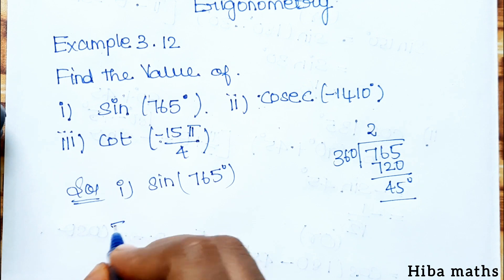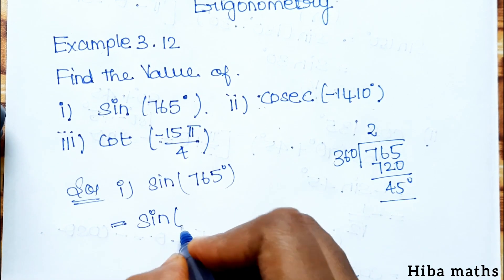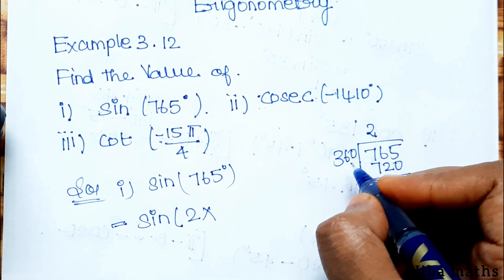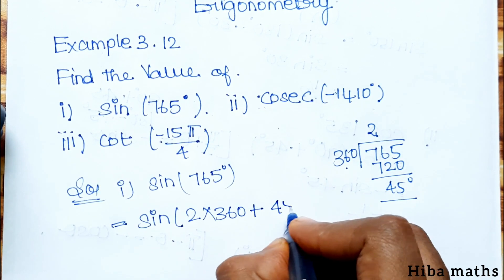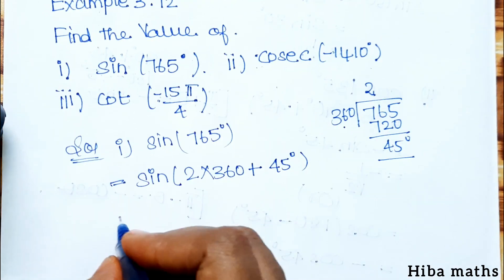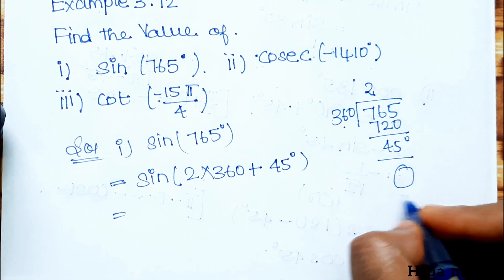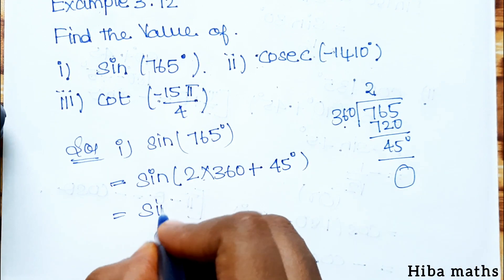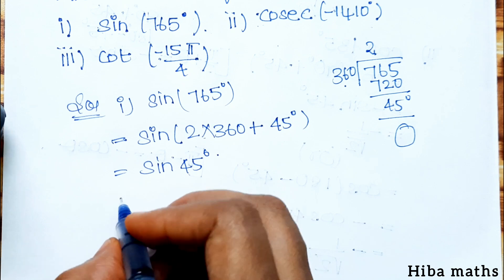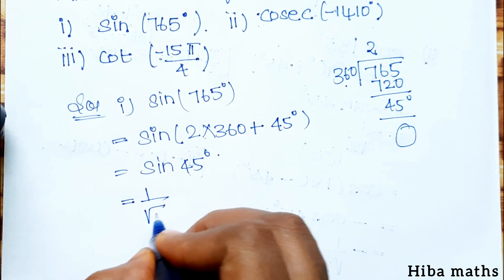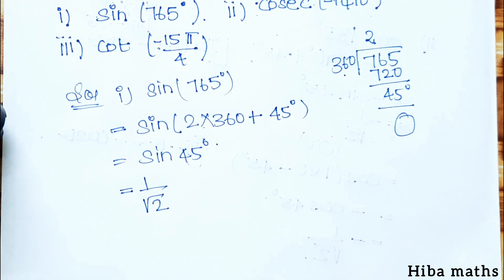So we write sin of 2 times 360 plus 45. Remember, 360 is a complete circle. So the value equals sin 45 degree, which equals 1 by root 2. That is very easy.